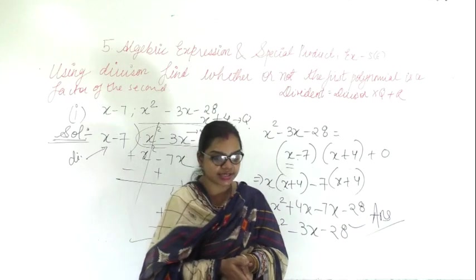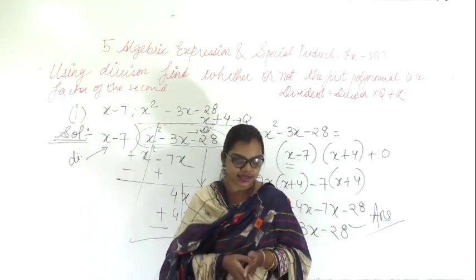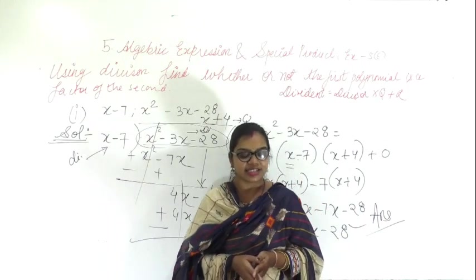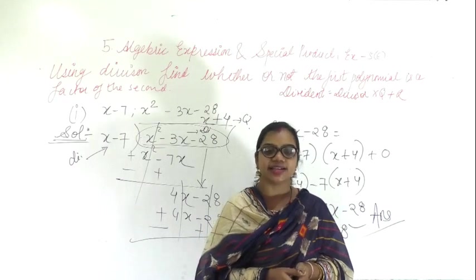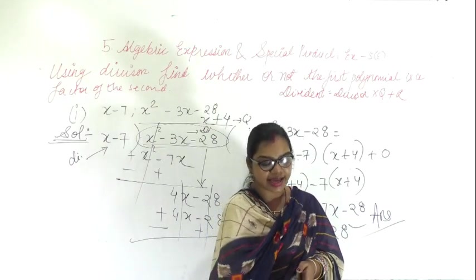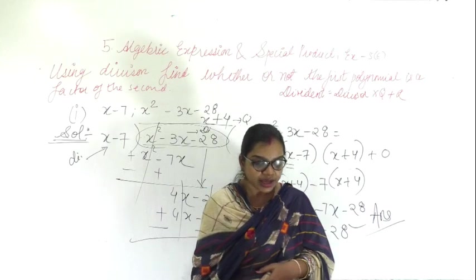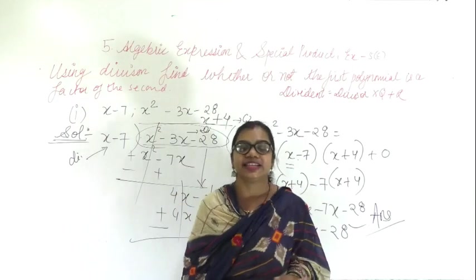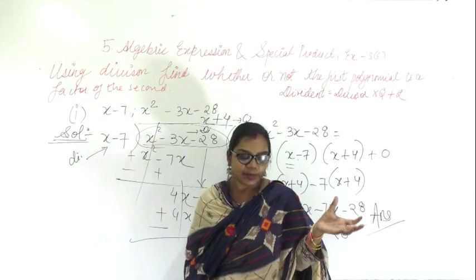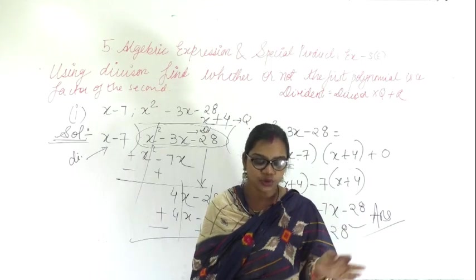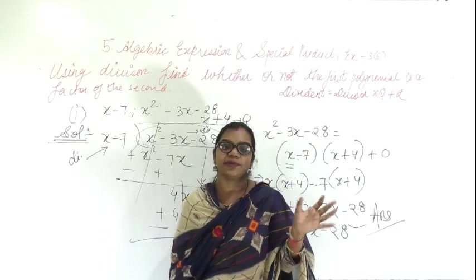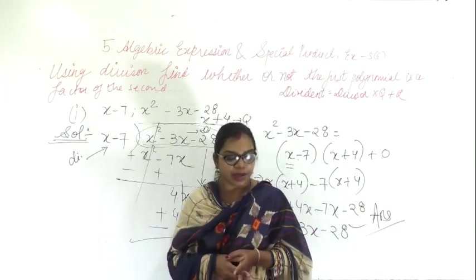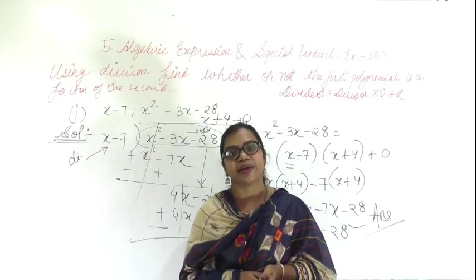In question number 14, what should be added to 6x to the power 5 plus 4x to the power 4 minus 27x cubed minus 27x minus 6 so that the resulting polynomial is exactly divisible by 2x squared minus 3? Follow the same process — whatever remainder you get will be the value that needs to be added to the dividend so the result is exactly divisible by 2x squared minus 3.